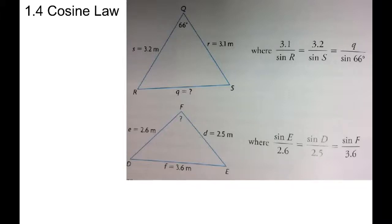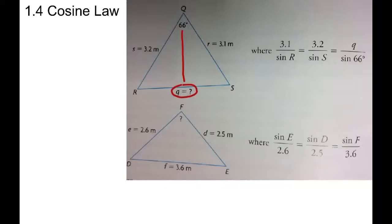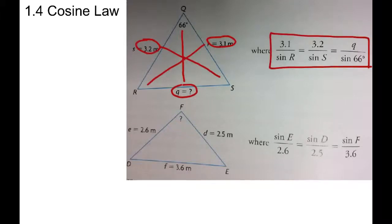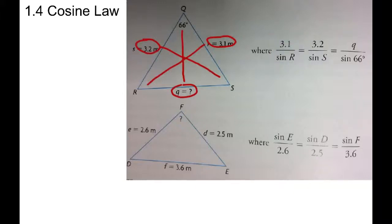Looking at the first example, it's asking us to find side q. Using the sine law, remember you have to have an angle and a side across from it. The 66 degrees and q are across from each other, so that part's good. Then we need a side and an angle opposite as well. So we have q over sine 66. If we use the 3.2 side, it's over sine s, or if we use the 3.1 side, it's over sine r. So in the formula we get all three sides: 3.1 over r, 3.2 over s, q over sine 66. It doesn't matter which two we pick — we're not going to be able to solve it. If we pick these two sides, we have angle r and angle s, and we can't solve for two unknowns in one equation.